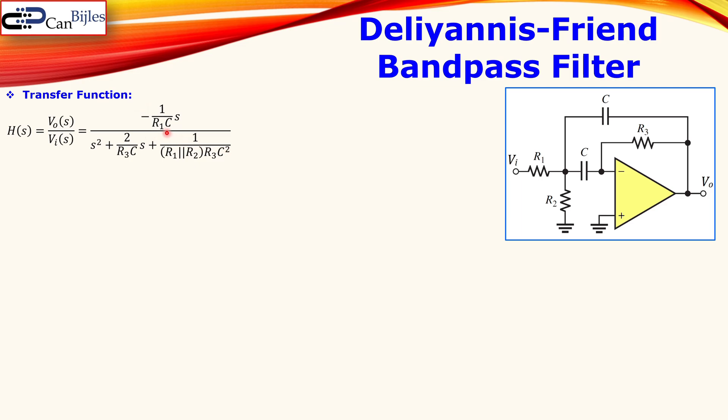In order to calculate the values of these resistors and the capacitors in this circuit, we need to compare this circuit with a standard second order bandpass filter transfer function. In this case, we see also this parallel combination, so R1 and R2. That is then given actually by this expression. So we can also write our transfer function in this format.